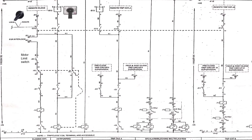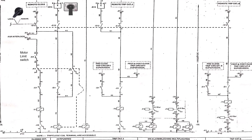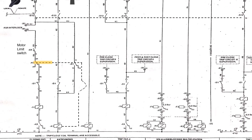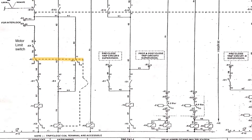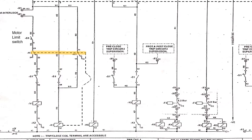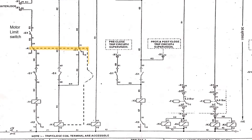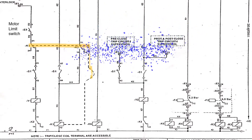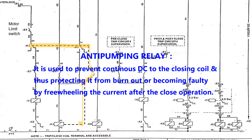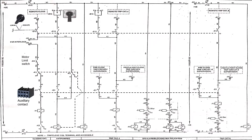Moving down we will see K1, which is an anti-pumping relay. Contacts of this relay are shown by the dotted line — whenever the relay is energized, it will change its contacts: NO will turn into NC and NC will turn into NO. The function of the anti-pumping relay is to prevent continuous DC to the closing coil, thereby protecting it from burning out or becoming faulty by freewheeling the current after the close operation.